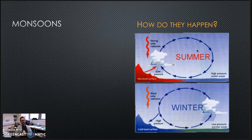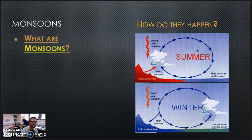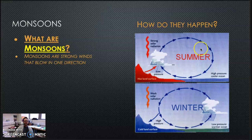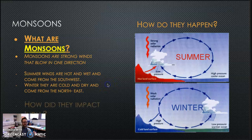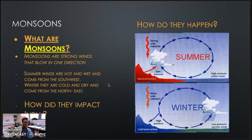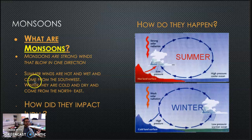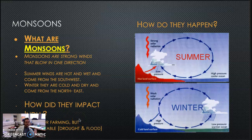Let's look at monsoons now. What are monsoons? Monsoons are strong winds that blow in one direction. Summer winds are hot and wet and come from the southwest. Winter winds are cold and dry and come from the northeast. How did the monsoons impact India? Well, they were good and they were bad — you're going to want to remember that. They were great for farming: when you had a good monsoon season, Indians were able to actually produce a double crop — they could harvest twice. But on the other hand, they were unpredictable, which meant sometimes they'd bring drought, but also sometimes they would bring flood.